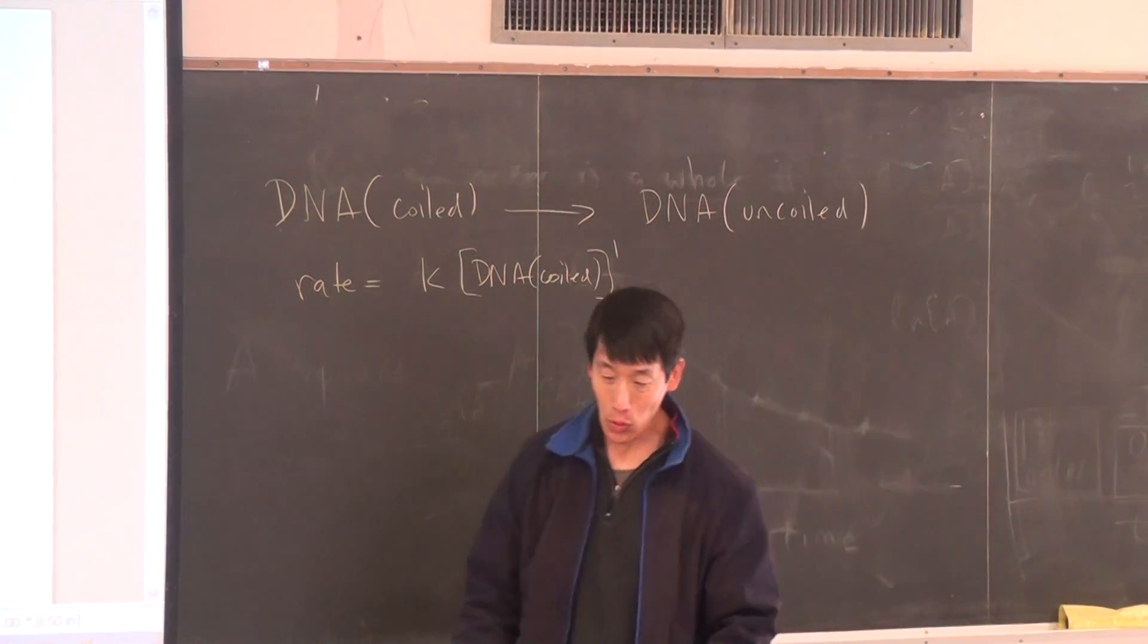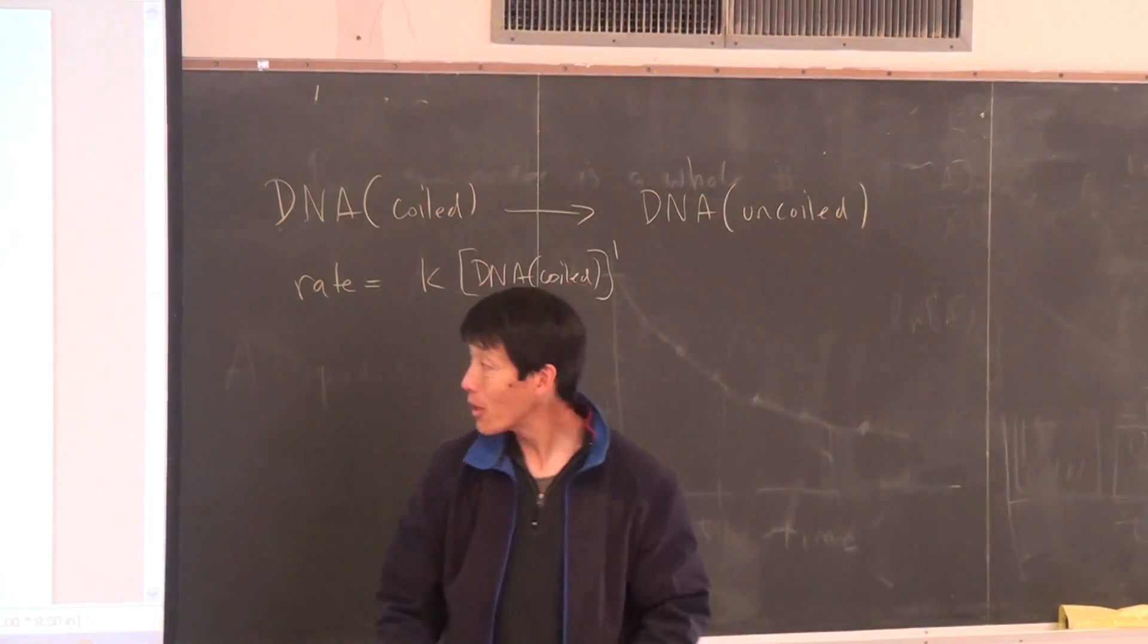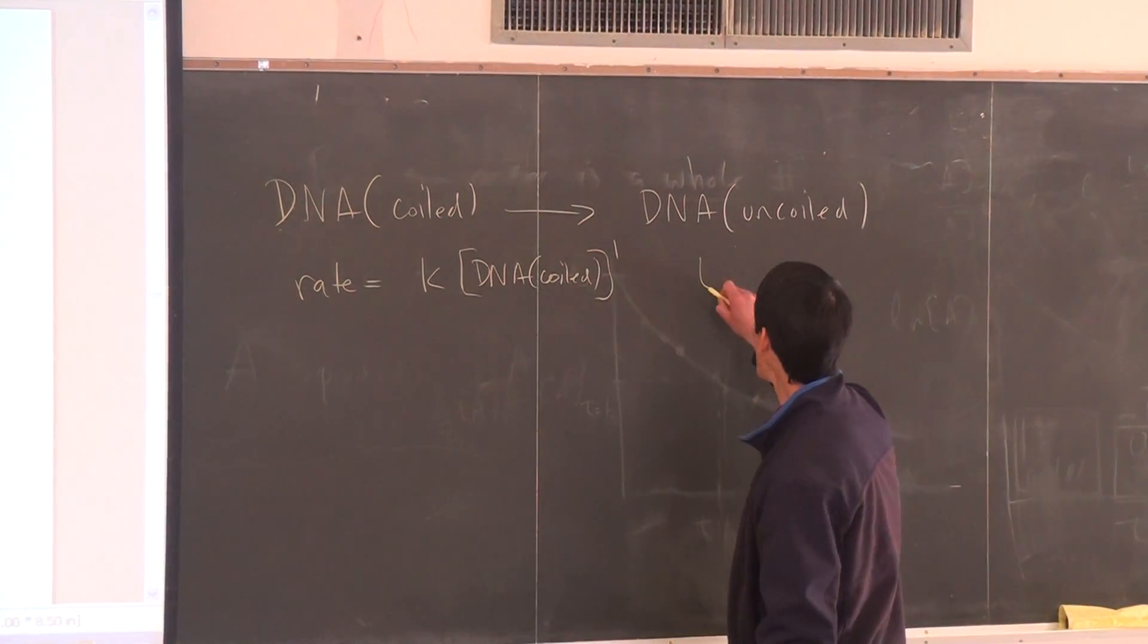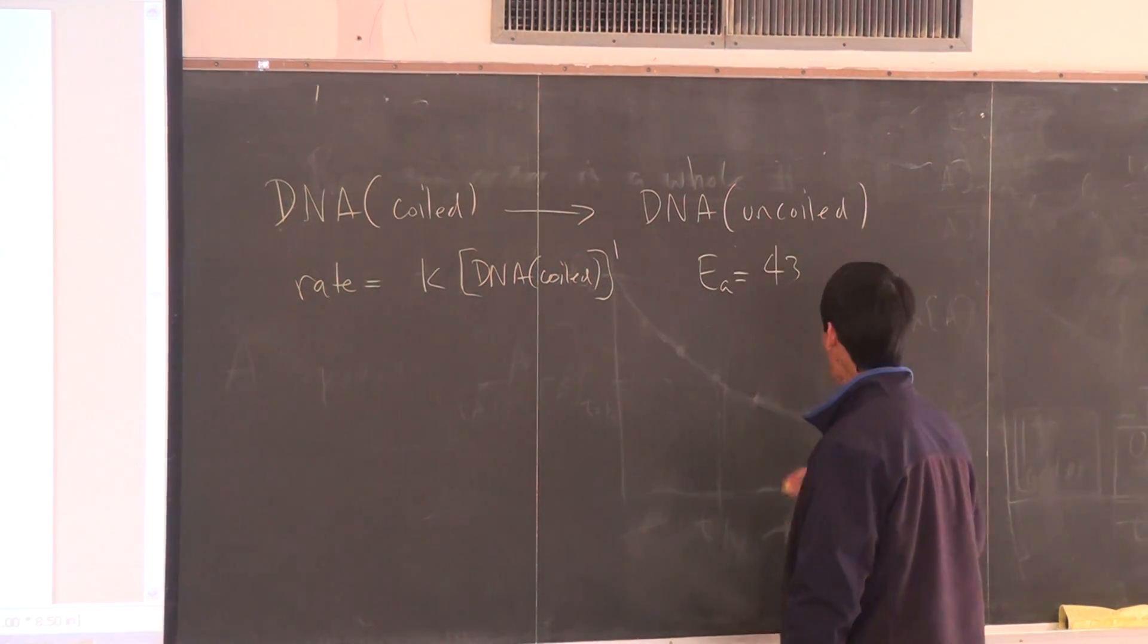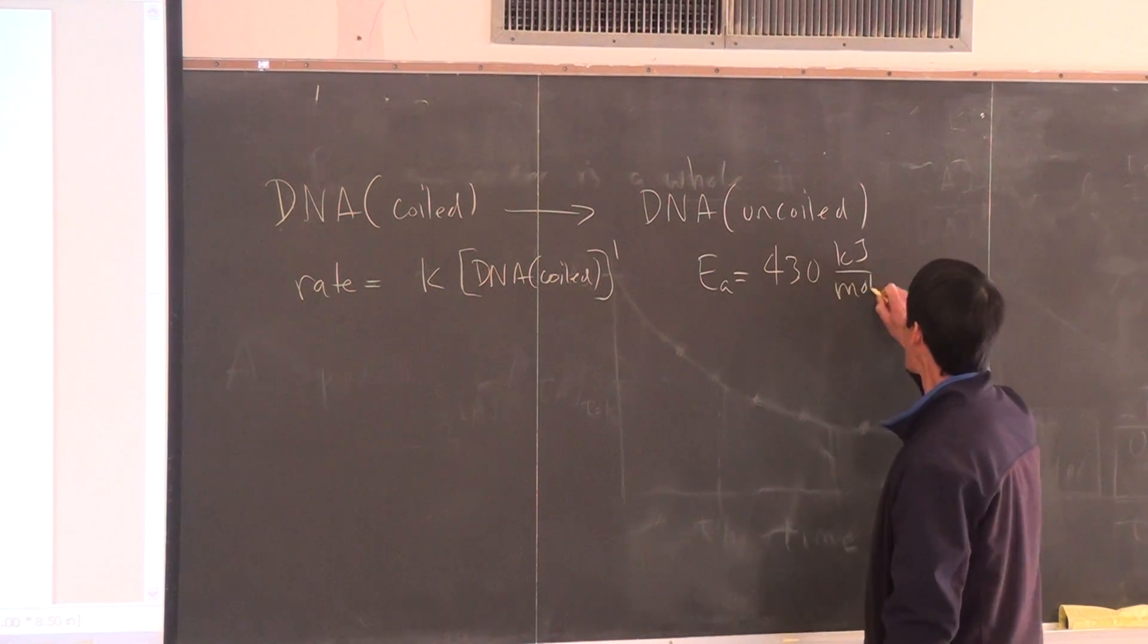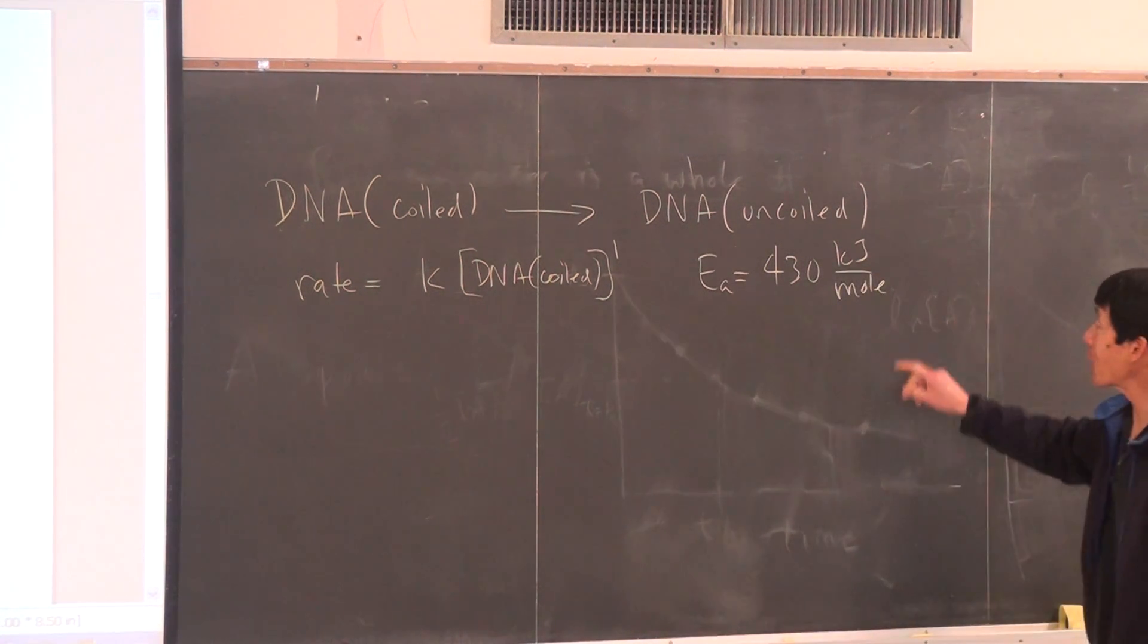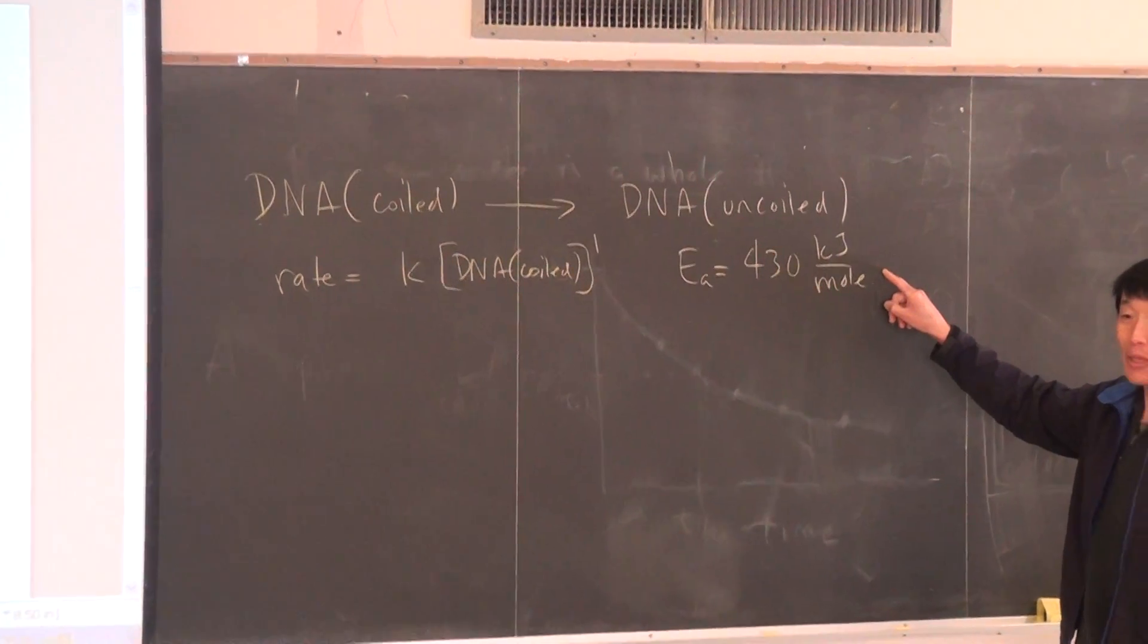Now, we're also told here that the activation energy is 430 kilojoules per mole. So our EA is 430 kilojoules per mole. Now, based on this number, is this a big energy or a small energy? What do you think? This is a big activation energy.